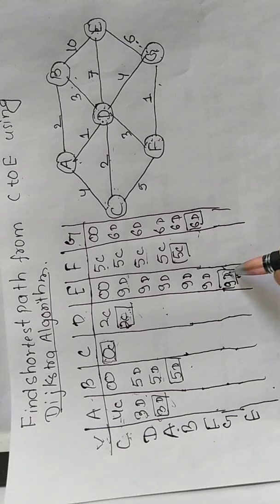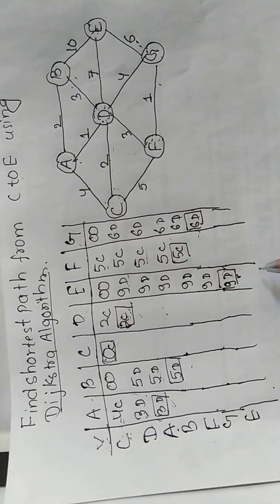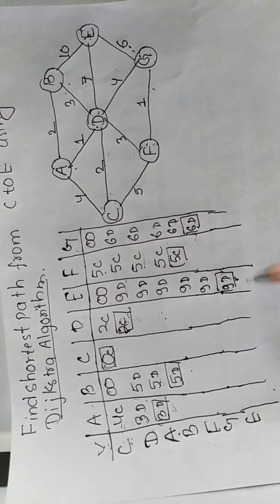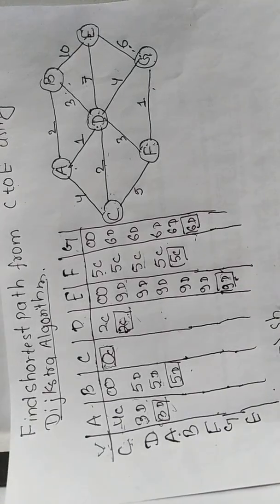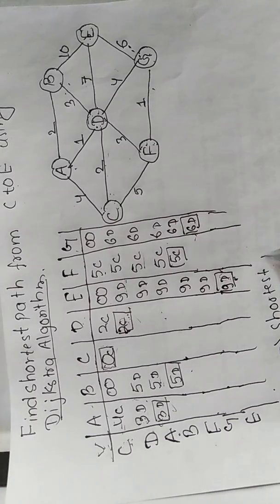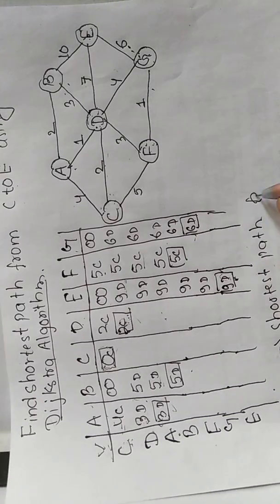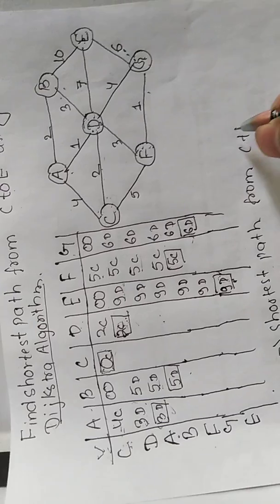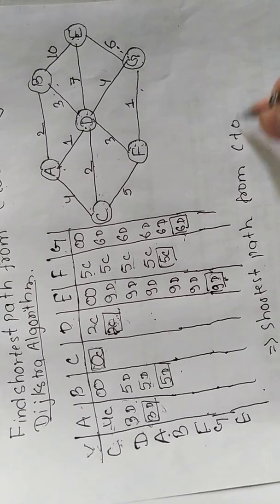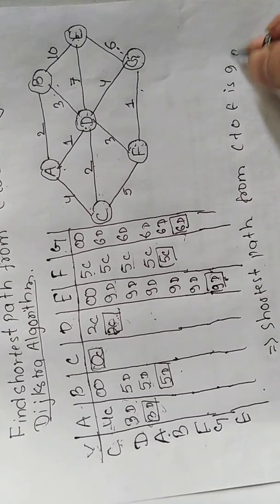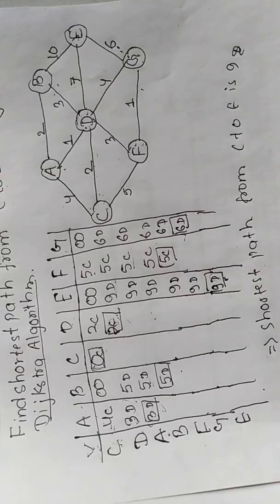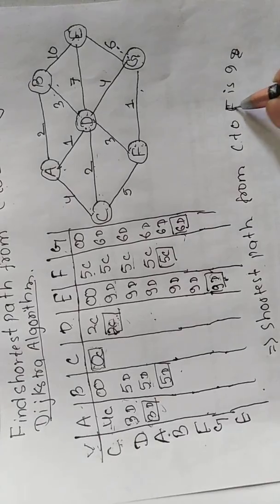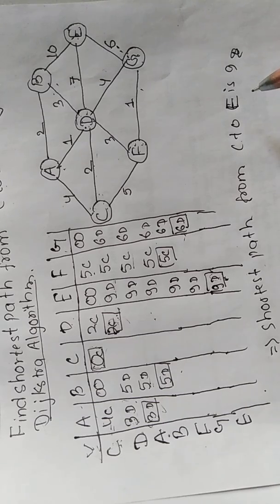So the answer is: C to G is 9. We have found the minimum weight between the vertices C to G. This is our answer. Thanks for watching our video.